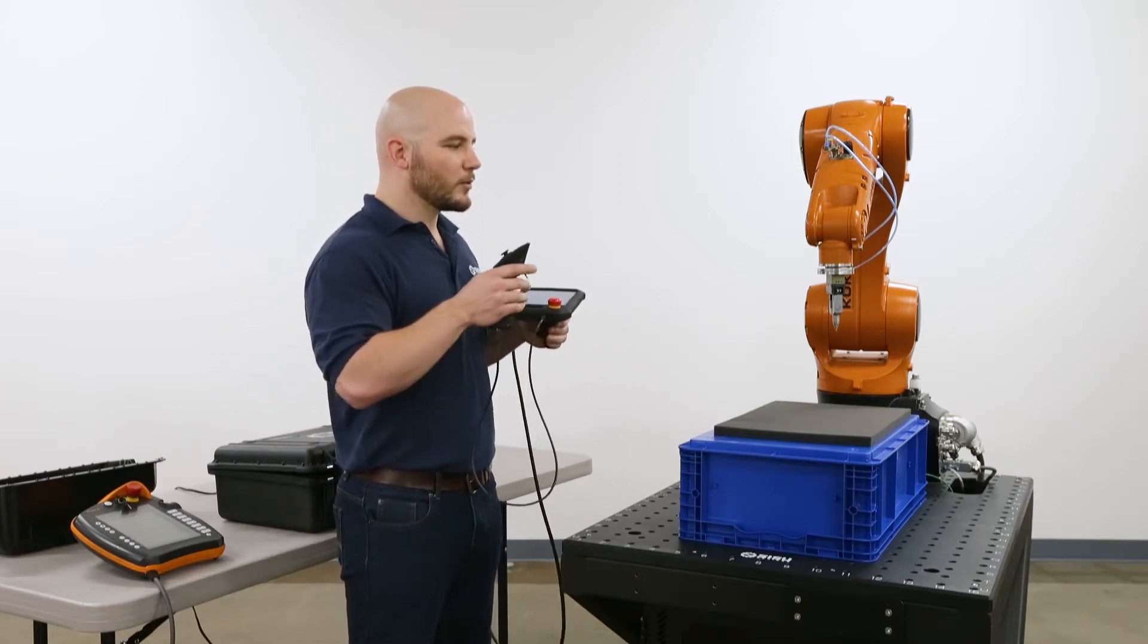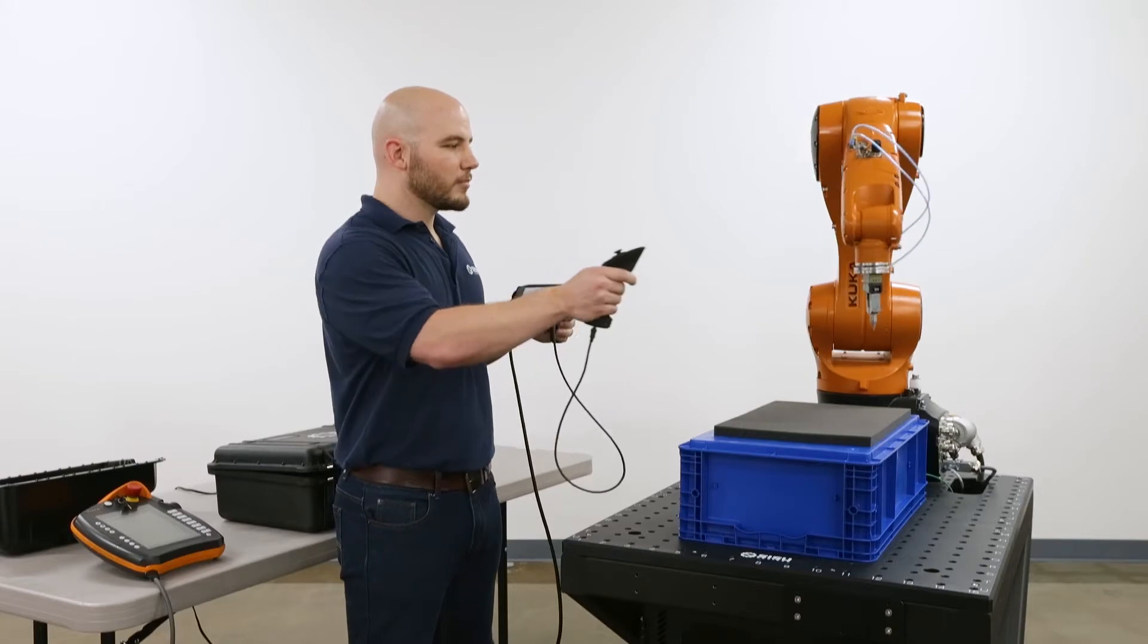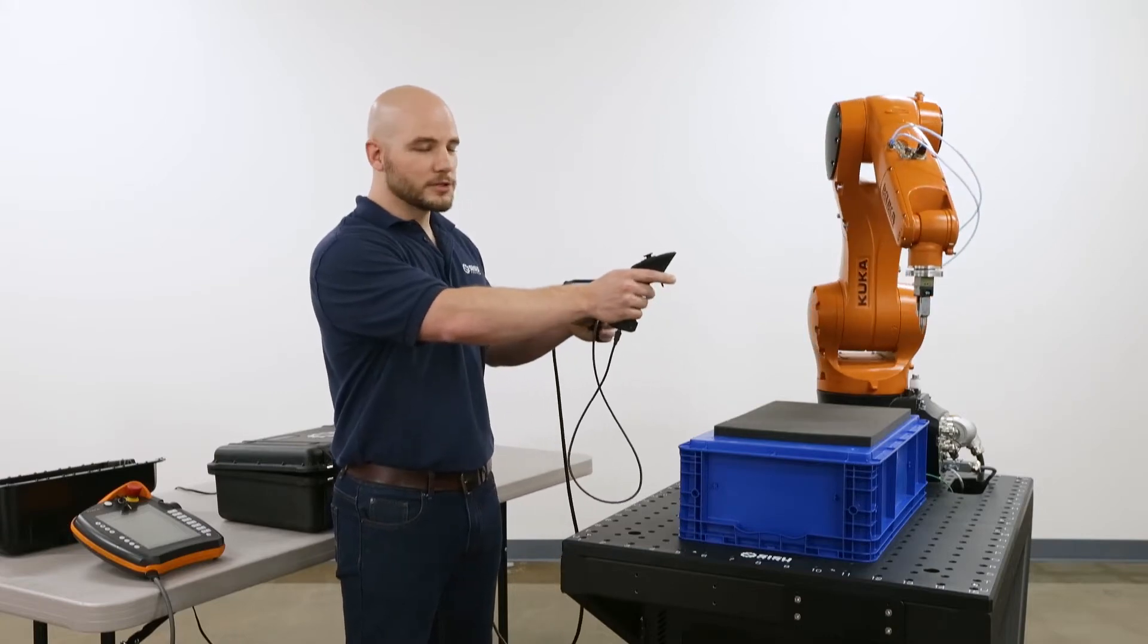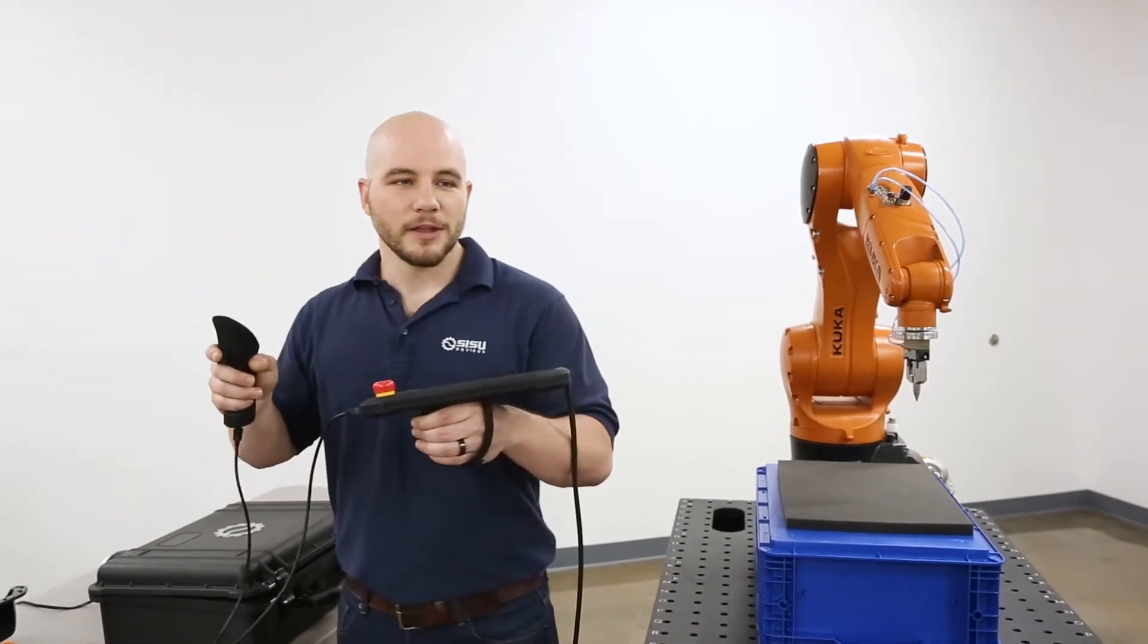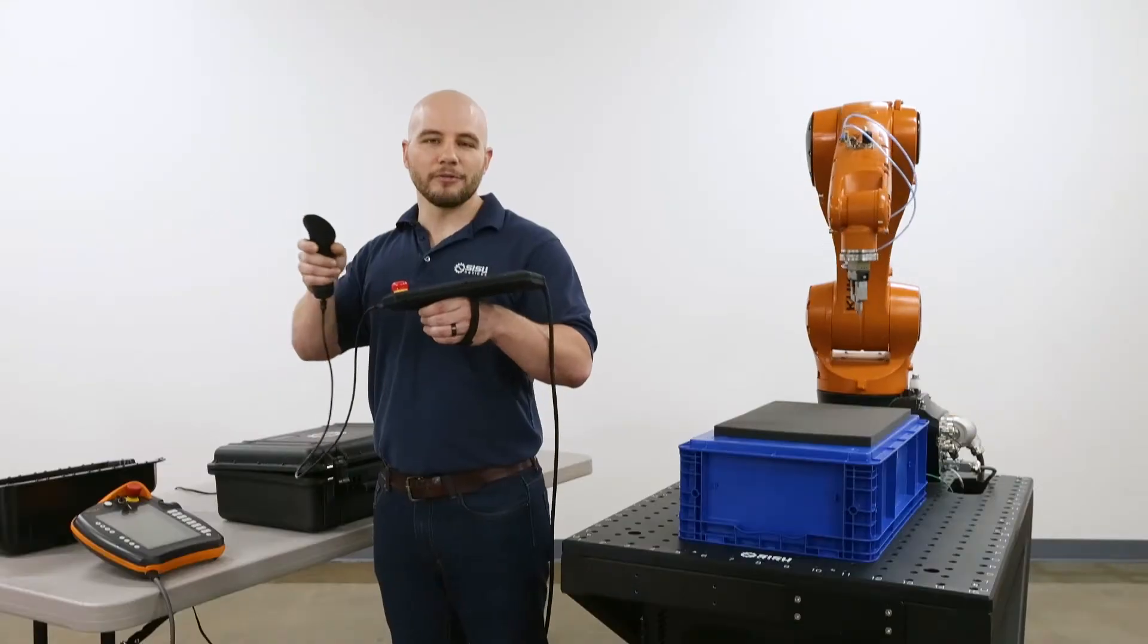If I stand facing the system and I want the end effector to go away from me, I push it away. If I want it to come closer, I pull it closer. It really doesn't matter how I'm oriented, the robot will follow. I never have to think backwards.